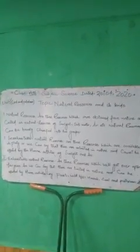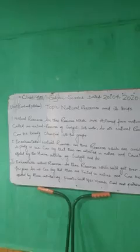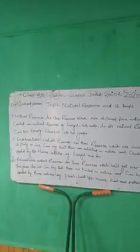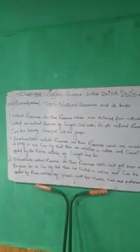یہ وہ resources ہیں جو human activities کی وجہ سے effect نہیں ہوتے ہیں اور کائنات میں ان کی تعداد unlimited ہے۔ اس کے بعد جو دوسرا kind ہے natural resource کا، جس کو آپ exhaustible natural resource بولتے ہیں۔